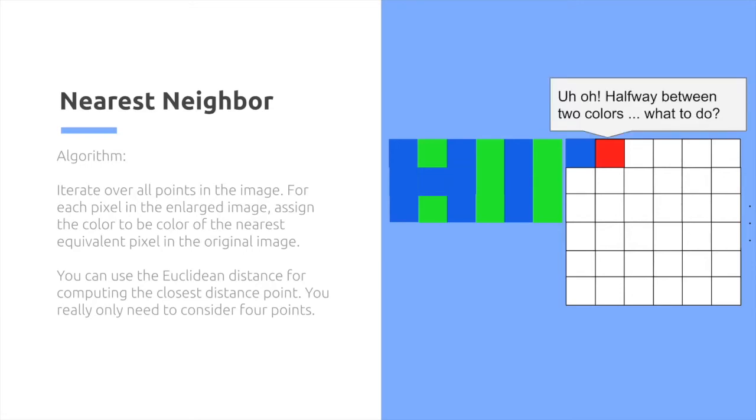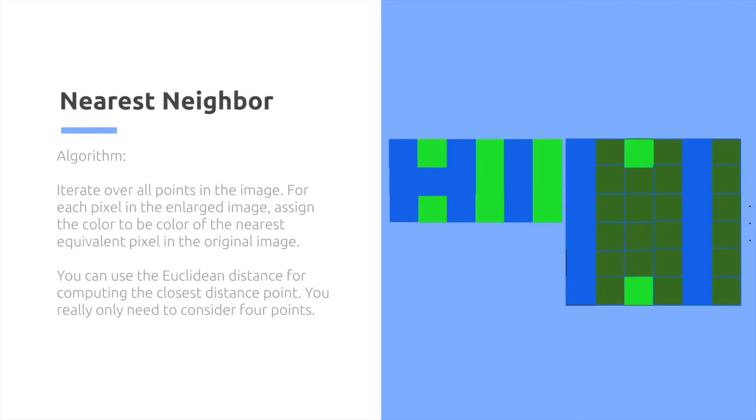So we have an issue here. This one's halfway between two colors. What do we do? Well, we can choose to do average, or we can always just pick a cardinal direction to always favor. So if we do this, we see we get a deep green, and then we can continue this out throughout the whole diagram, and we get a fairly interesting result.